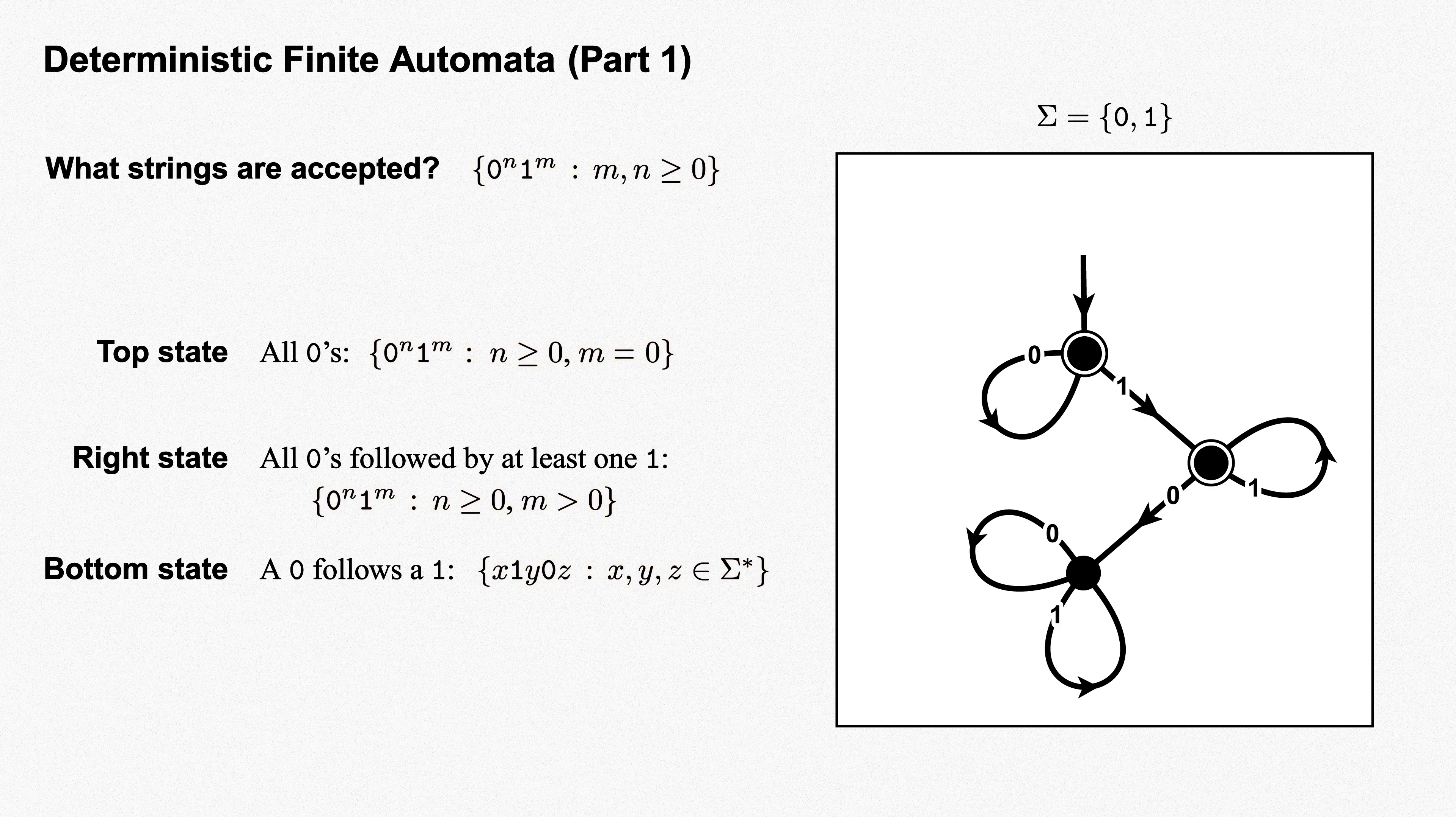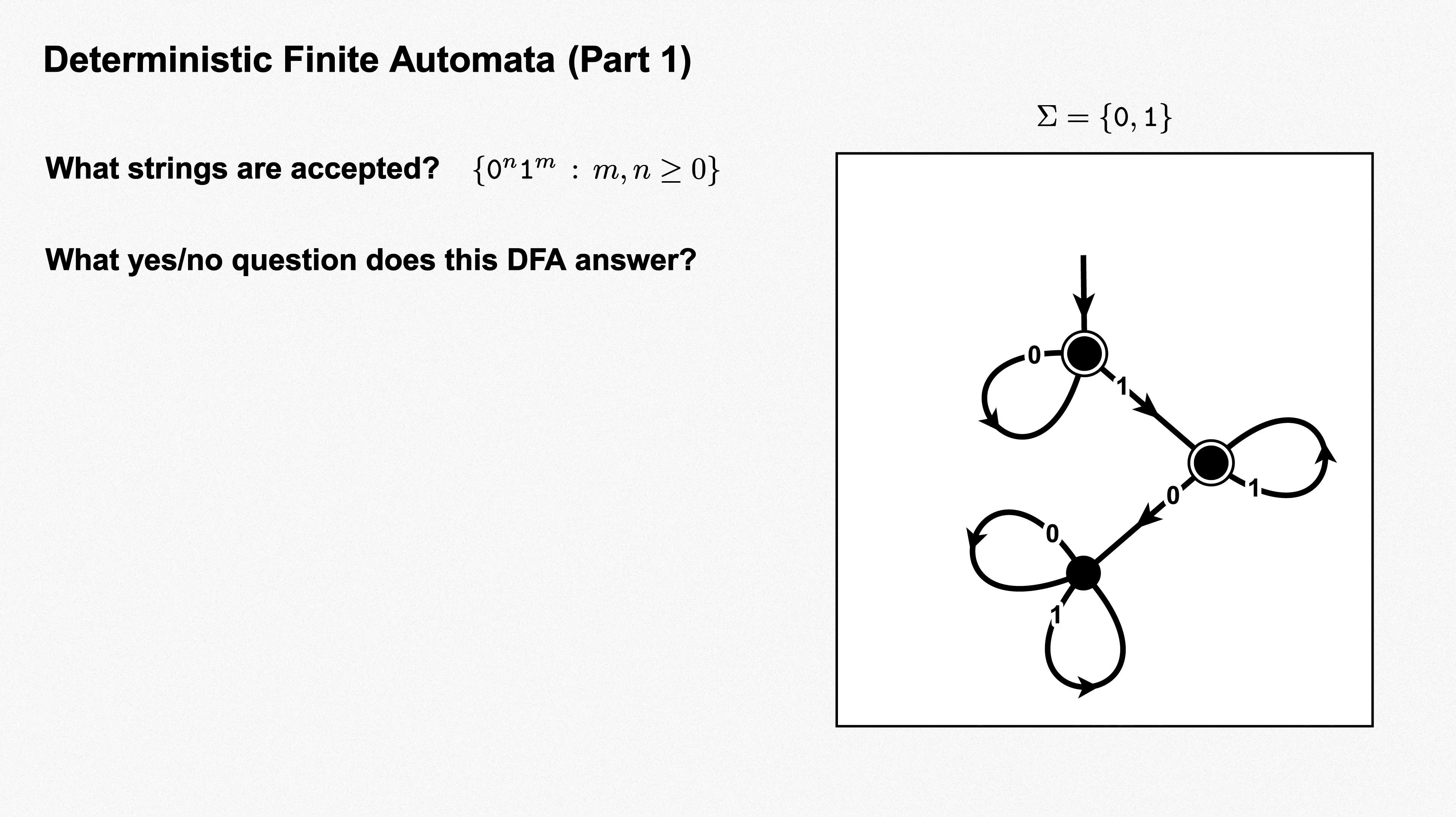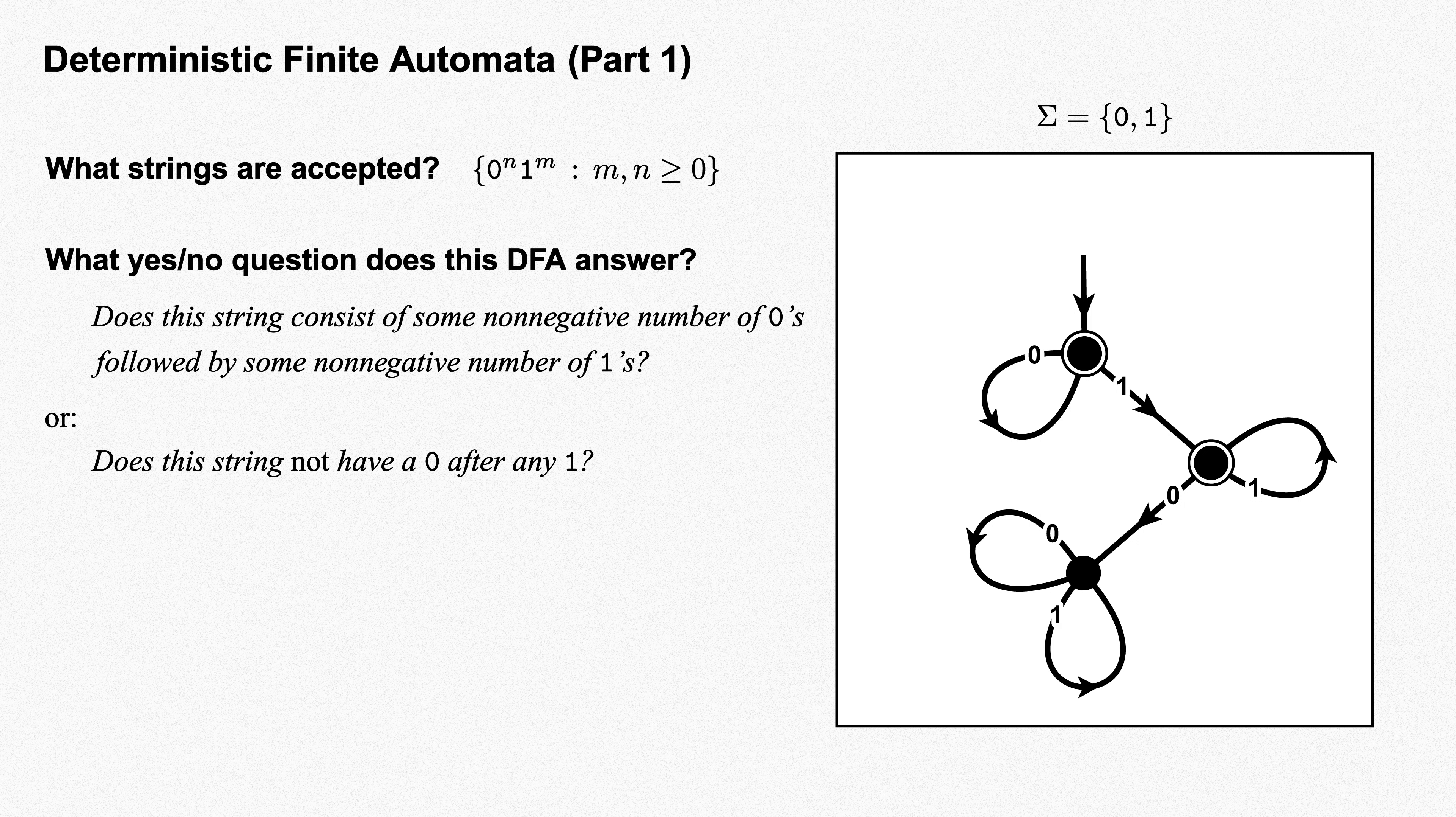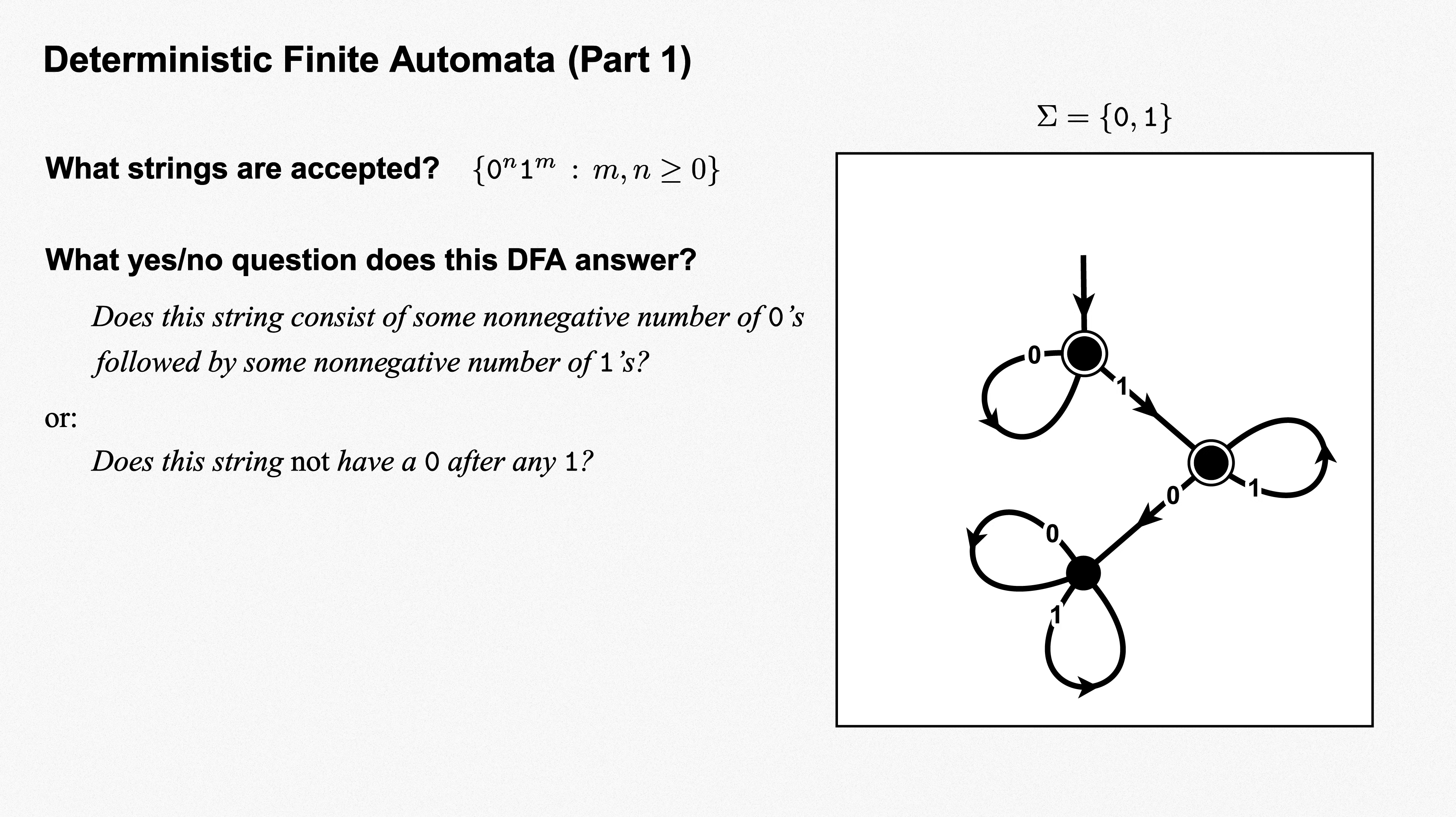Equivalently, recall we can think of this DFA as answering a yes-no question about the string it's given. Does this string consist of some non-negative number of zeros, followed by some non-negative number of ones? Or alternatively, does this string not have a zero after any one? Our DFA accepts strings for which the answer is yes, and rejects those for which the answer is no.